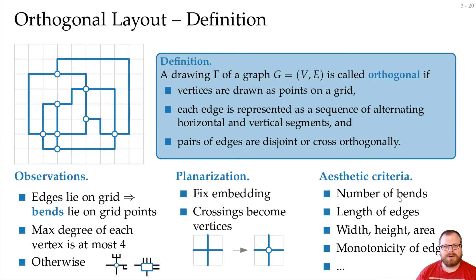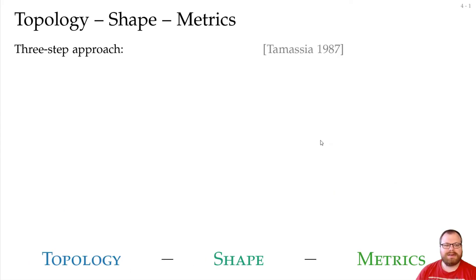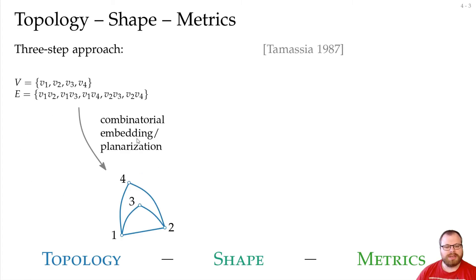To this end, Tamassia in 1987 introduced a three-step approach, the so-called topology-shape-metrics approach. For that, we take as input a sum graph in a standard representation, and in the first step, in the topology step, we want to find an embedding of the graph. And during that, we also planarize it, so that we have a planar embedding. That's a standard step that you often do when you have a graph, you first find some embedding, and then you want to draw it somehow. And the optimization criteria in this step is to reduce the number of crossings, or to reduce the number of vertices we have to add, so that it becomes planar.